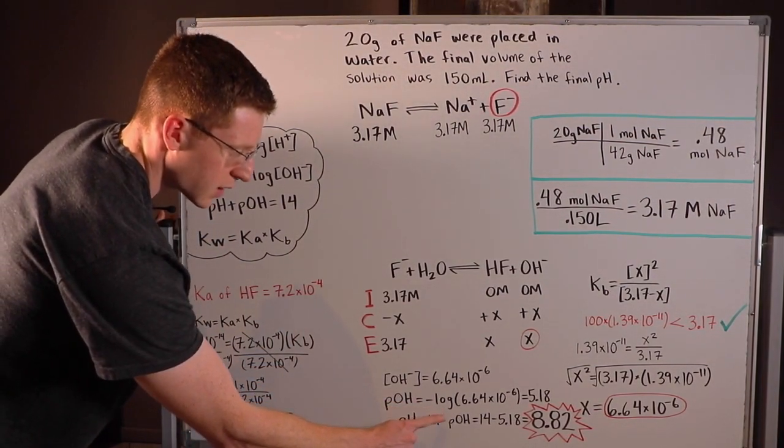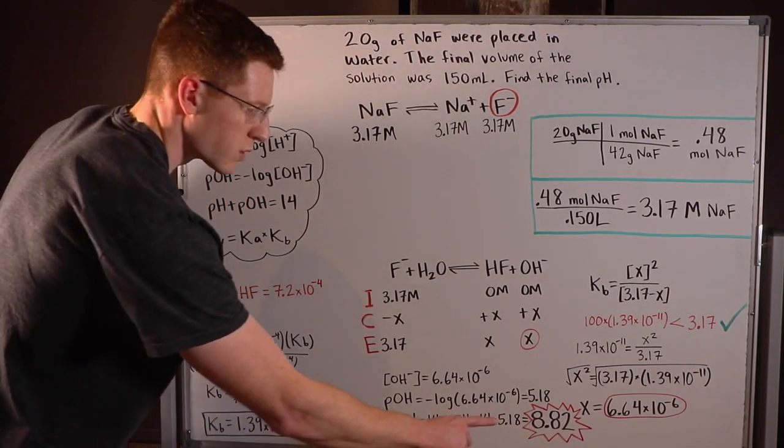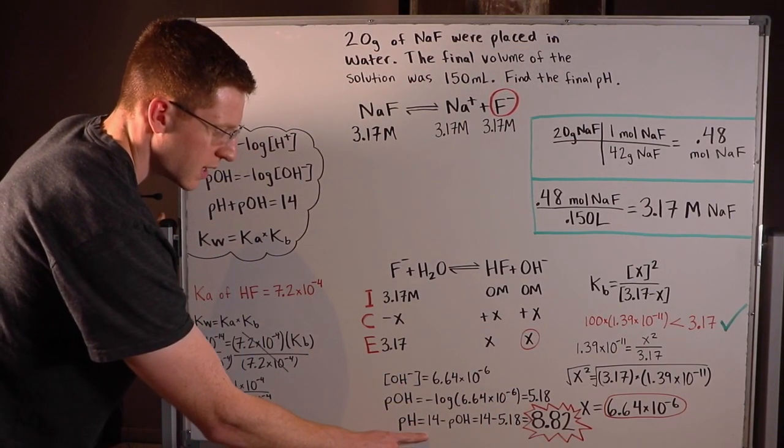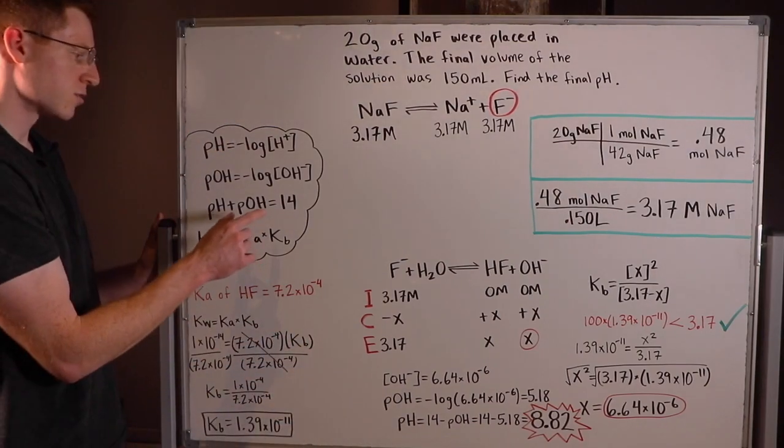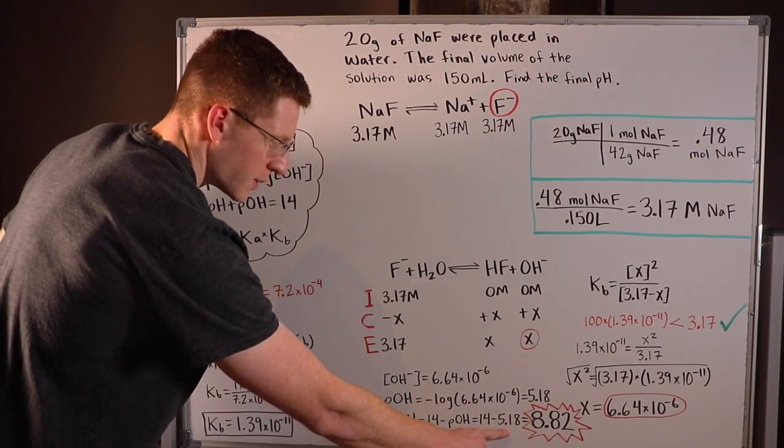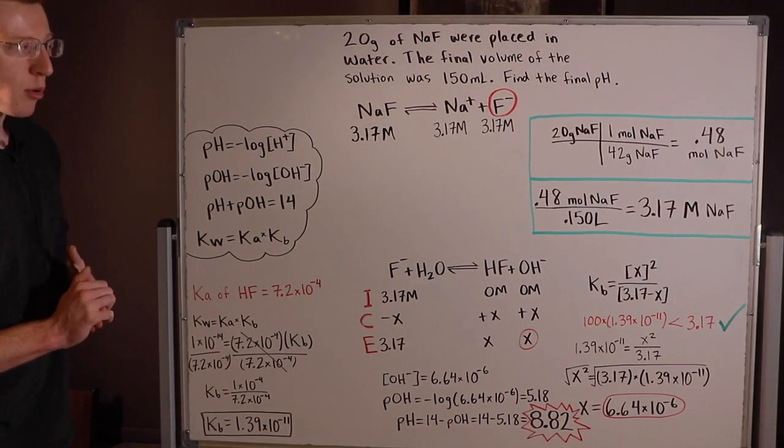So pOH is equal to -log times 6.64 × 10⁻⁶, which was 5.18. And finally, I was able to say that pH is equal to 14 - pOH, rearranging this equation right here. Plug in 5.18 for pOH and you find that the final pH of the solution was 8.82.